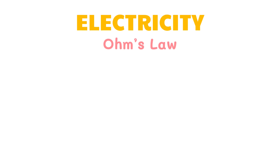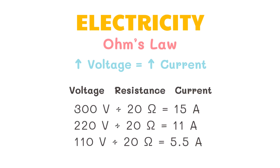Remember that voltage and current are directly proportional, so if we increase voltage, current also increases. Now, let's use the formula discussed and take a look at these three sample equations. Notice that as we increase the voltage, the current also increases.